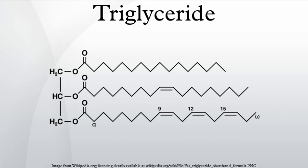Triglycerides are the main constituents of vegetable oil and animal fats. Triglycerides are a major component of human skin oils. Regarding chemical structure, triglycerides are formed by combining glycerol with three fatty acid molecules. Alcohols have a hydroxyl group; organic acids have a carboxyl group. Alcohols and organic acids join to form esters. The glycerol molecule has three hydroxyl groups.